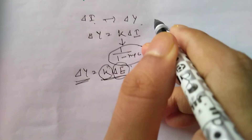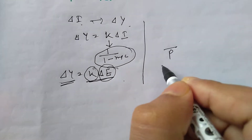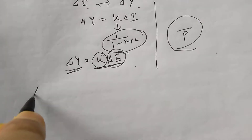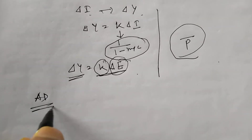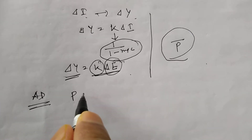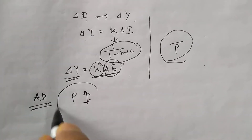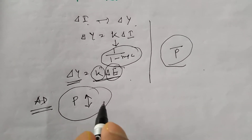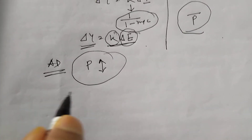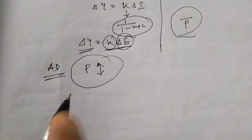But in all these cases we assume that price is constant. In the case of aggregate demand curve analysis of the multiplier, we will allow price to vary — price is not constant. When price varies, the multiplier analysis involves two cases.